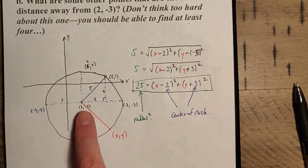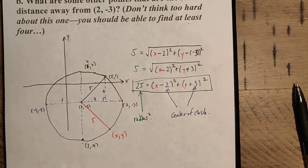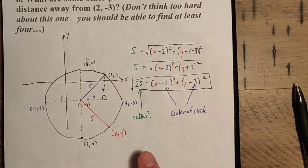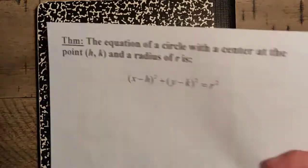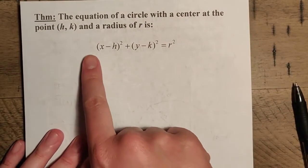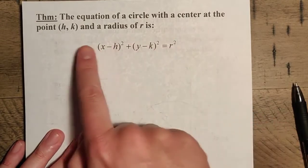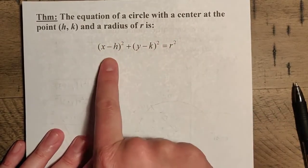And of course, we can just do this again with a general center and a general radius. And you can very easily see that we can take this and simply turn this into the equation of a circle. So therefore, we can note that the equation of a circle with a center at the point h comma k and a radius of r is this.